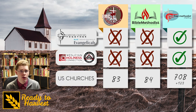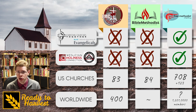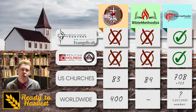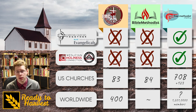As of this video, the Evangelical Methodist Church has 83 churches in the U.S. and around 400 churches overall worldwide. The Bible Methodist Church has 84 churches in the U.S. and a small number of mission works in other countries. The Free Methodist Church has 708 churches in the U.S. and 123 church plants. Worldwide, there are 1,201,000 members in an unknown number of churches.